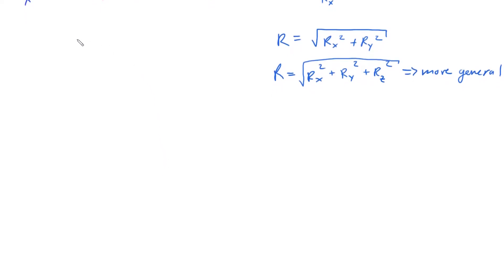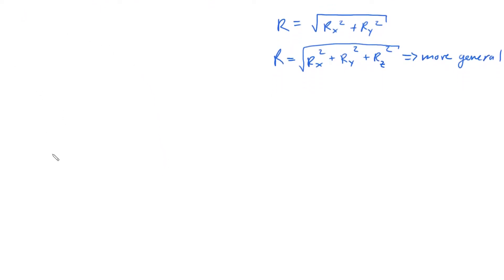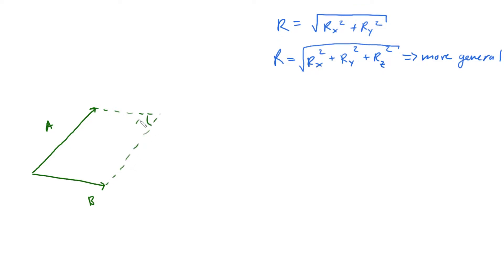Now we're going to add and subtract vectors geometrically. We take arbitrary vector a and arbitrary vector b and add them together. There are two ways to do it: the parallelogram method or the tip-to-tail method. With the parallelogram method, you make a parallelogram with the two vectors so that the angles between them are equal, and then connect the opposite corners to get a plus b.